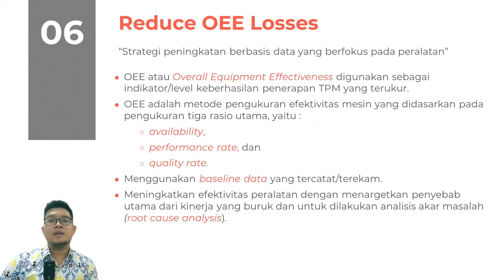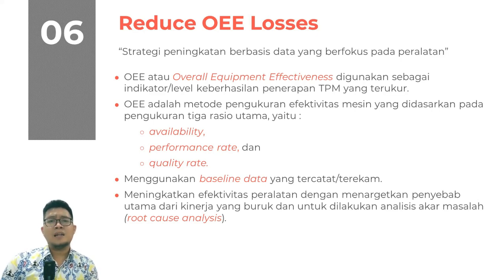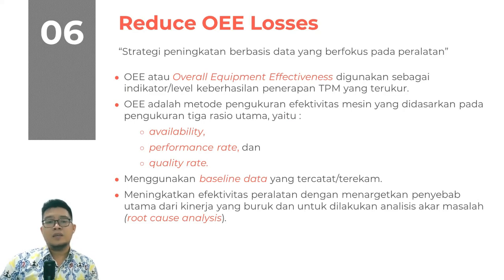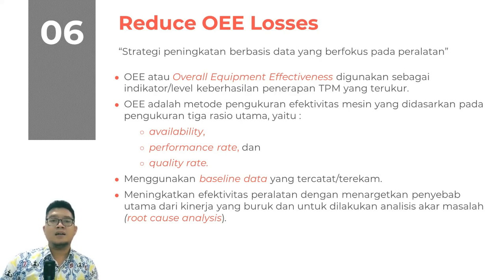Pilar yang keenam adalah mengurangi kehilangan dari OEE, atau dapat diintisarikan sebagai strategi peningkatan atau improvement berbasis data yang berfokus pada peralatan. OEE atau Overall Equipment Effectiveness digunakan sebagai indikator atau level keberhasilan dari penerapan TPM yang terukur. OEE juga merupakan metode pengukuran efektivitas mesin yang didasarkan pada pengukuran tiga parameter utama yaitu Availability, Performance Rate, dan Quality Rate. Untuk menghitung OEE diperlukan baseline data yang sudah terekam sebelumnya. Pilar ke-6 ini meningkatkan efektivitas peralatan dengan menargetkan penyebab utama dari kinerja yang buruk untuk dilakukan analisis akar masalah atau root cause analysis. Dari ketiga parameter ini, yang paling rendah itulah yang akan kita cari akar penyebabnya.